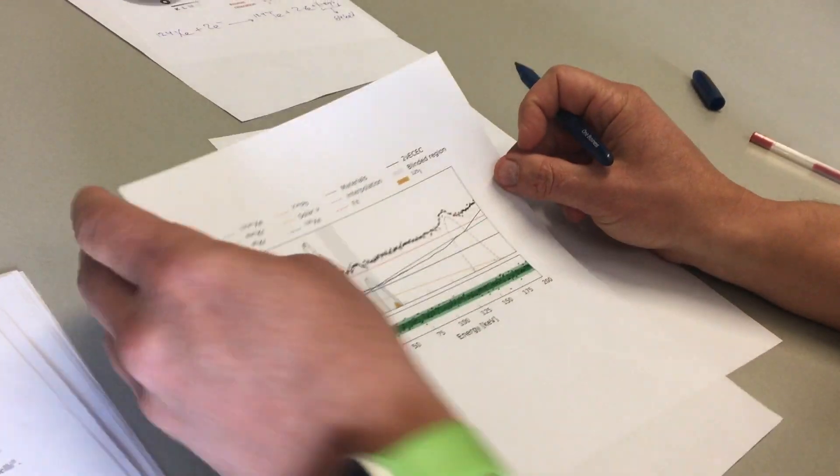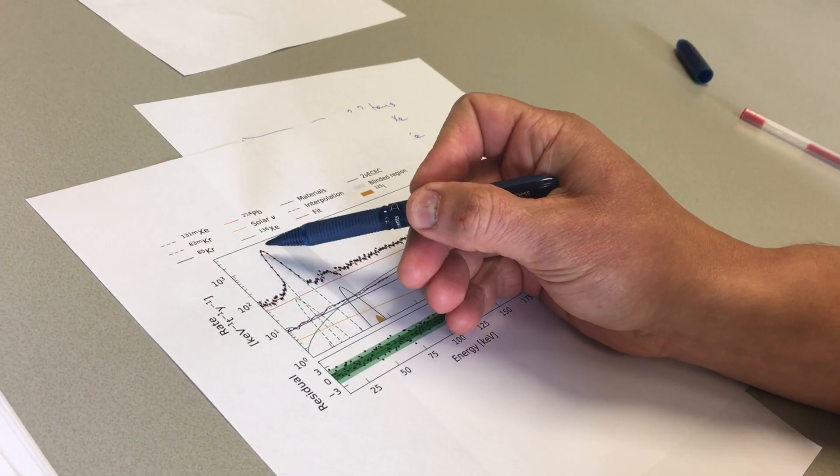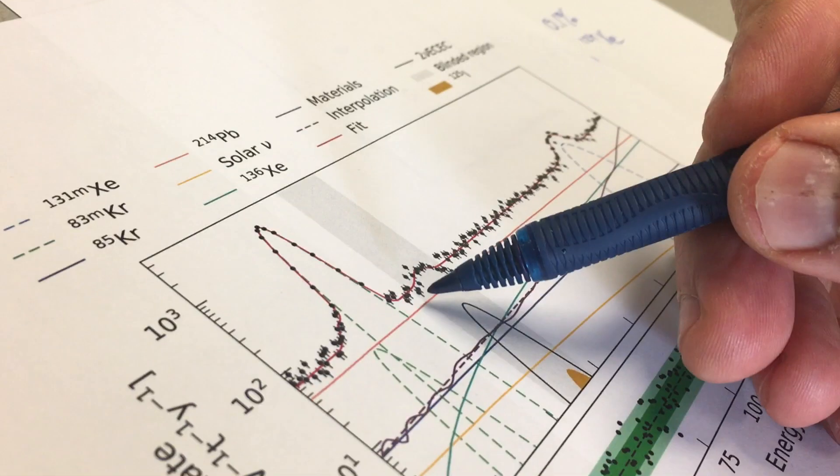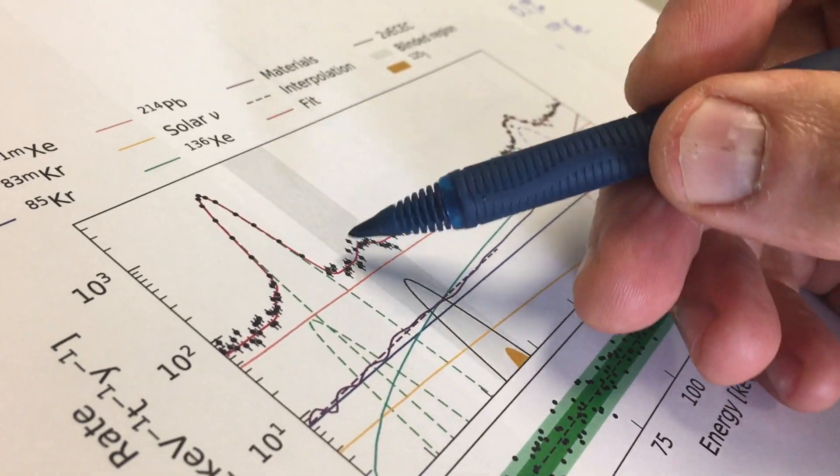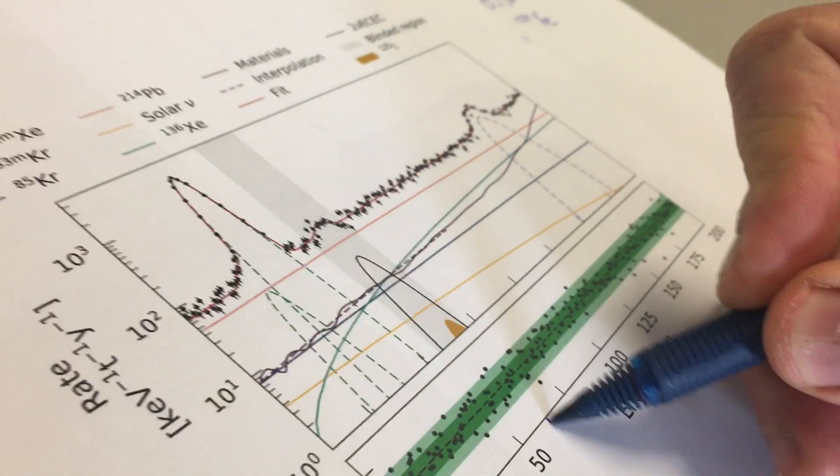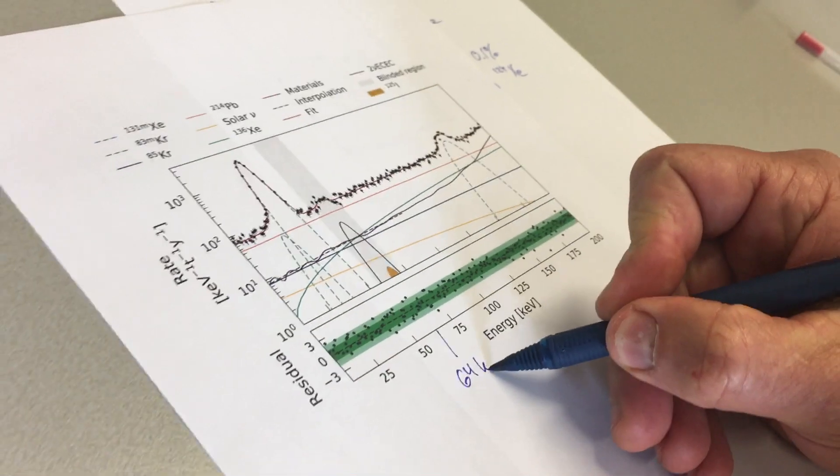And this is the key figure, and the black points here are the data that we measure. The interesting part is what happens in this gray shaded region, because that's the region around 64 keV.